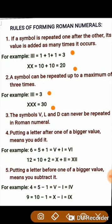The fourth rule says: putting a letter after one of bigger value means you add it. For example, forming the number 6: 6 can be written as 5 plus 1. Since 5 is represented by V and 1 is represented by I, it is written as VI. Another example is 12: 12 can be written as 10 plus 2. Since 10 is written as X and 2 is represented by II, it is written as XII.